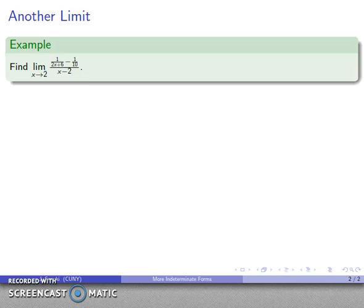Another indeterminate form is something when we have a limit of a complex fraction over something else. So here we have the limit as x going to 2 of 1 over 2x plus 6 minus 1 over 10 over x minus 2.